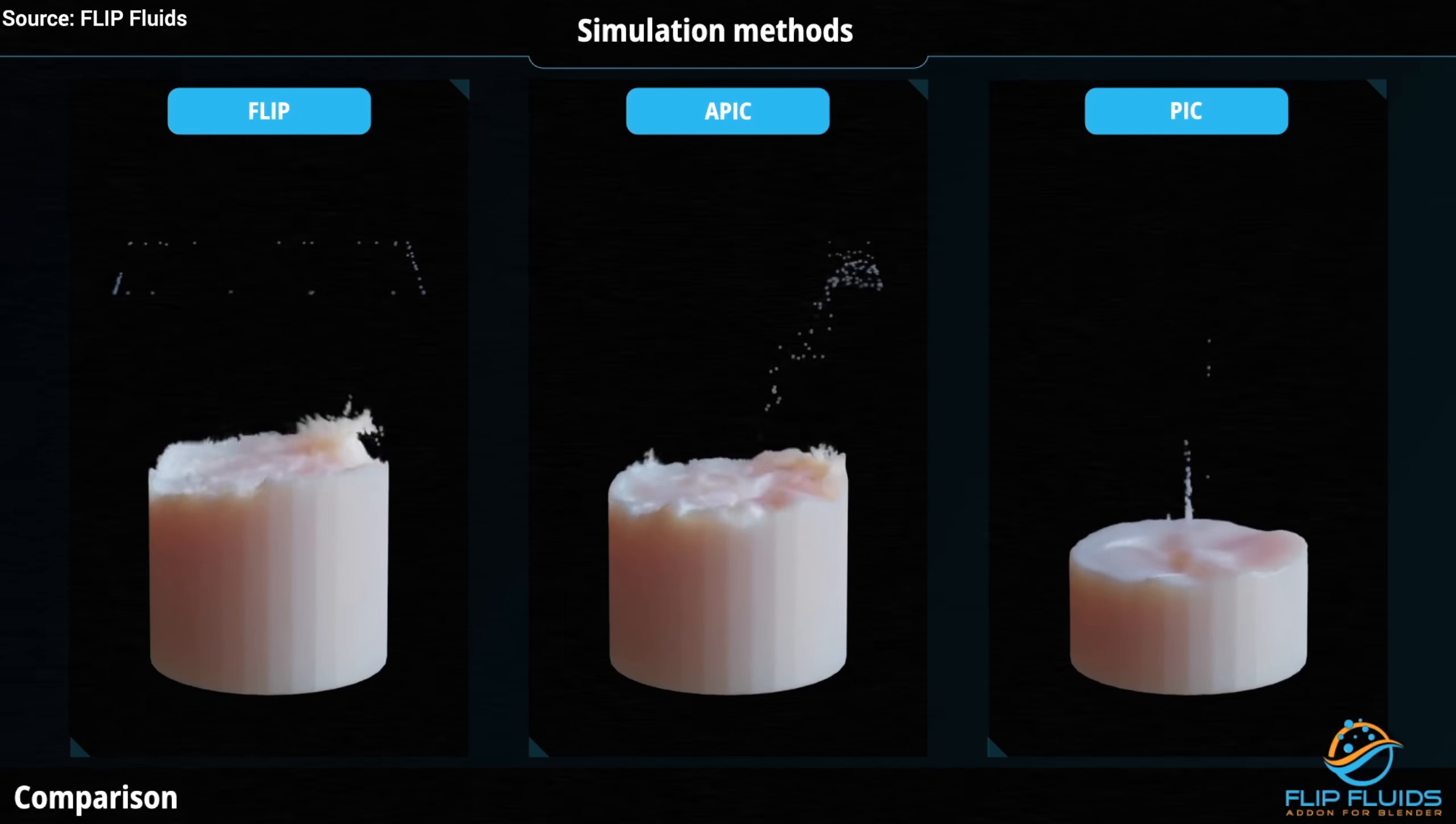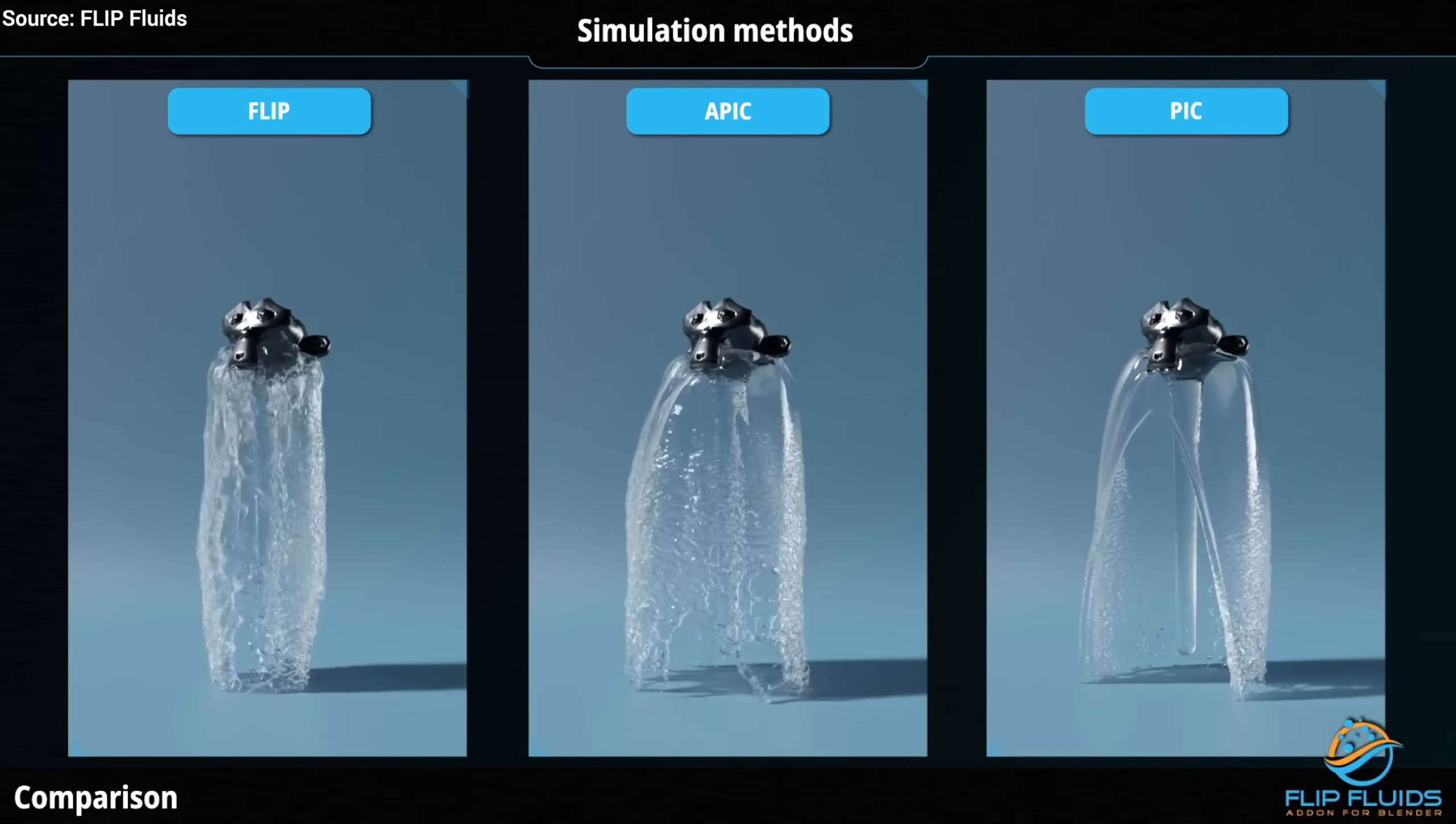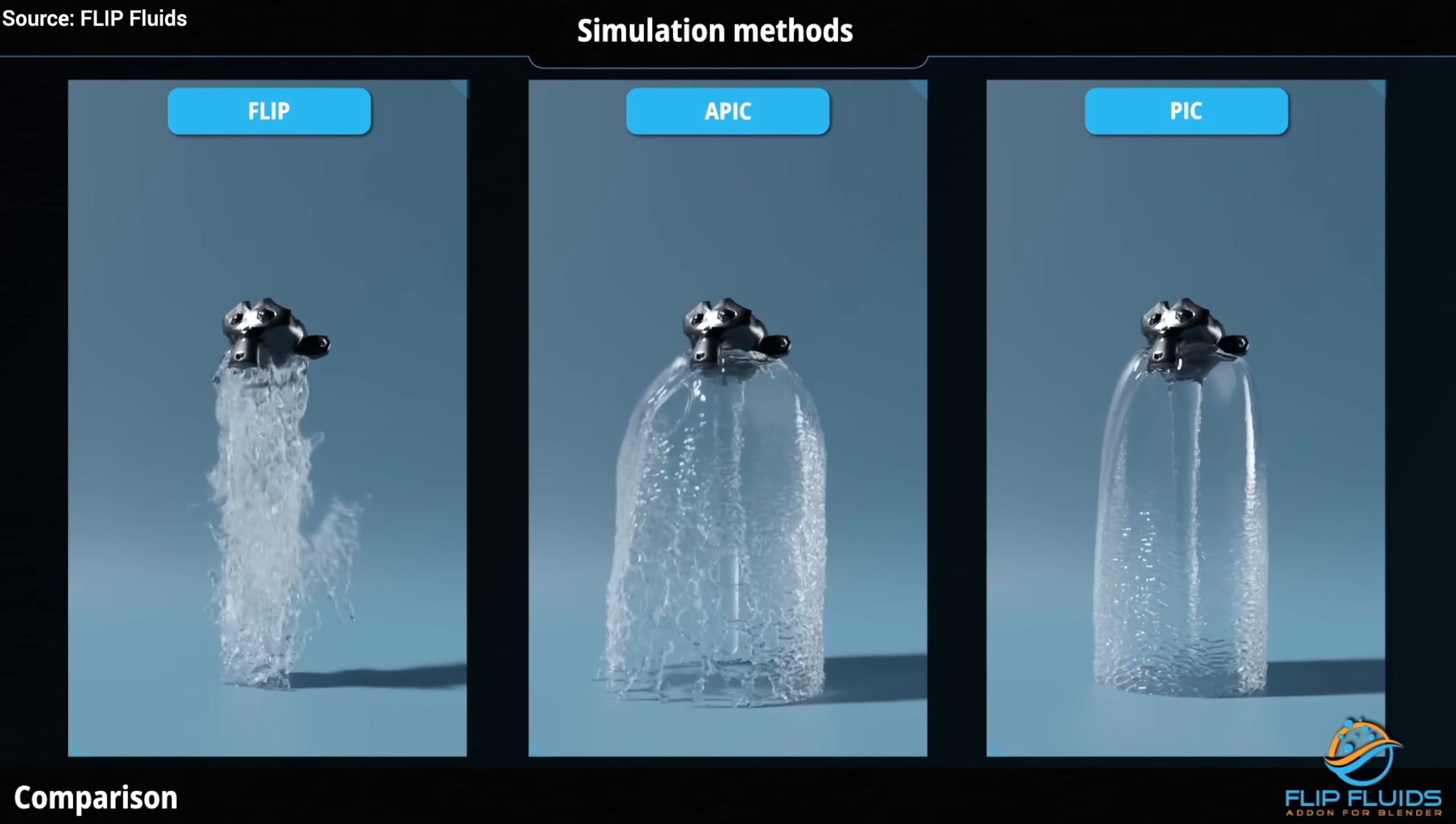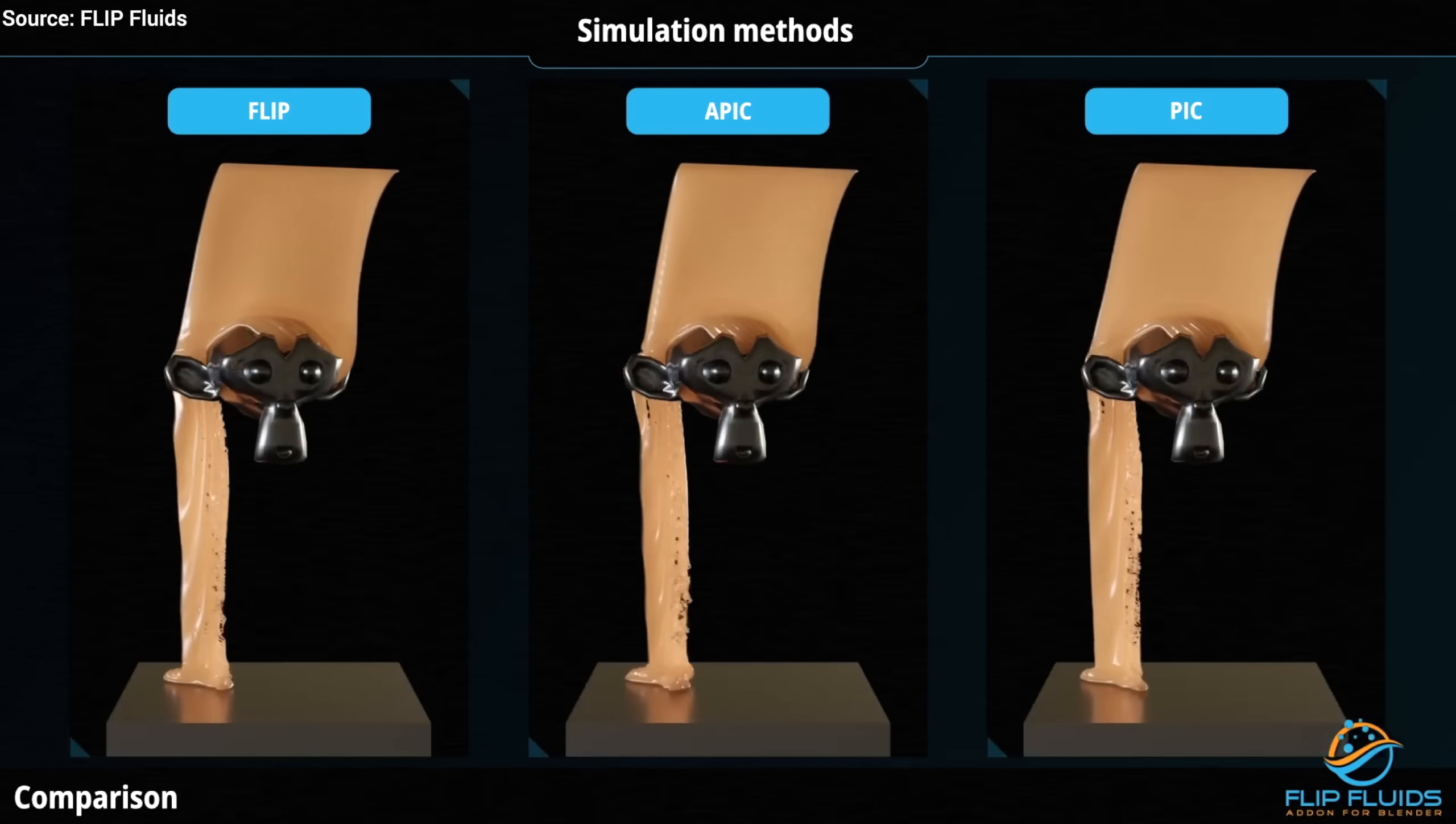Well, FLIP cannot easily combine air and water interaction, so no spray particles for us. It is possible, but not easy. Also, cinematic simulations need billions of particles and huge grids. This is still too costly.